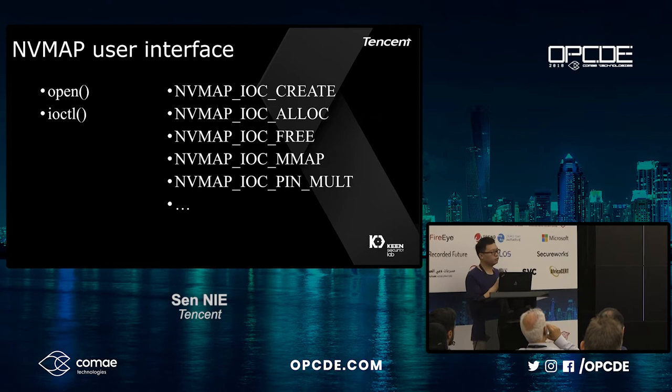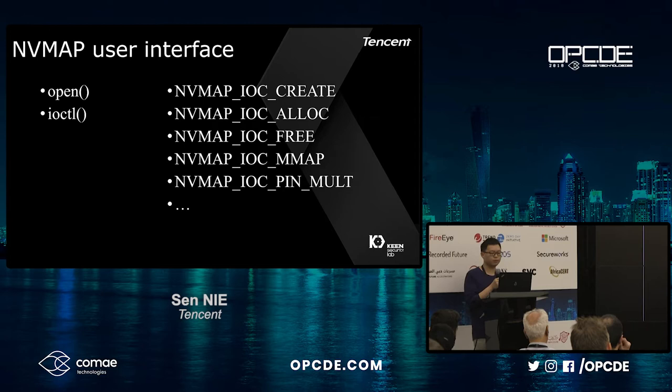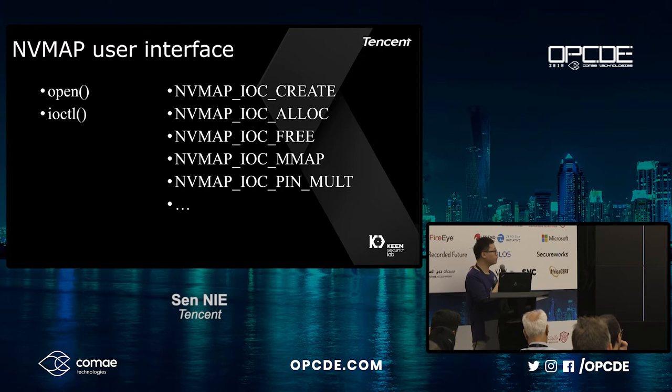NVMap is a typical Linux driver. A user process can access it by opening the driver, getting a handle, and then sending IO control codes. There are many IO control command codes — for example, NVMap IOC create, free, map, and the last one, pin multiple. I will talk about them later.